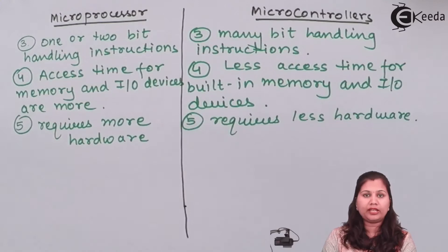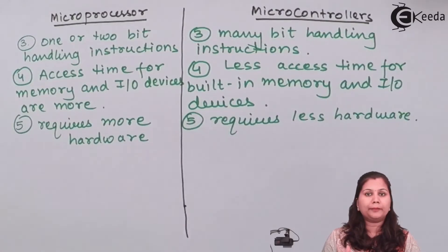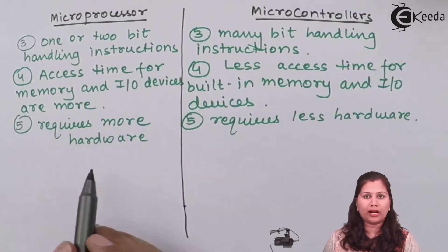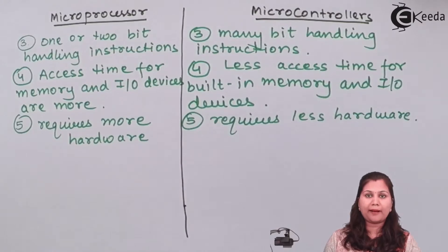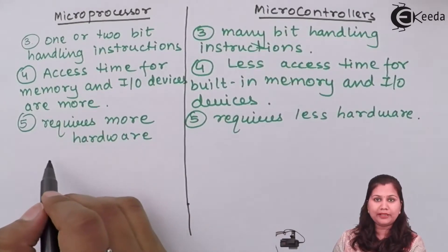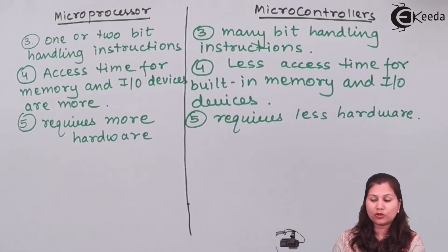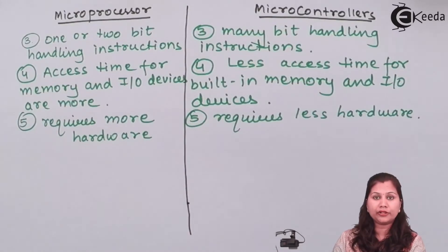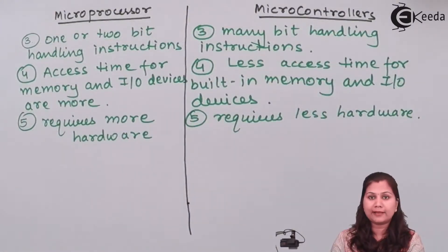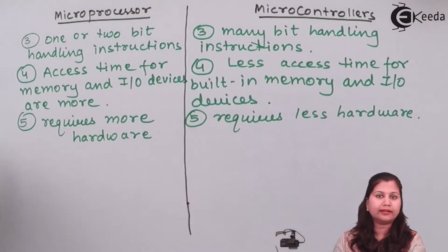In a microprocessor, because the ALU, control unit, and memory units are all separate devices, applications using a microprocessor require more hardware. Whereas in microcontrollers, all devices are present on the same chip, so they require less hardware. As a result, PCB size increases for microprocessor-based applications, whereas in microcontroller-based applications PCB size is reduced. Also, because all components are on the same chip, reliability is increased, so microcontroller-based applications are more reliable.